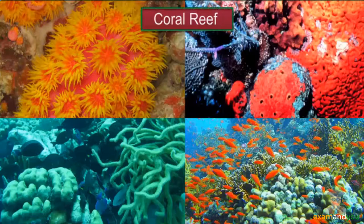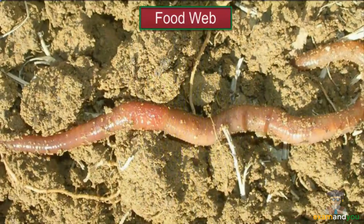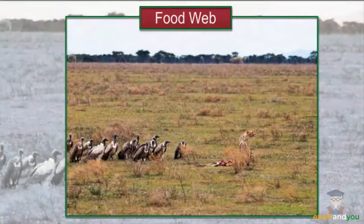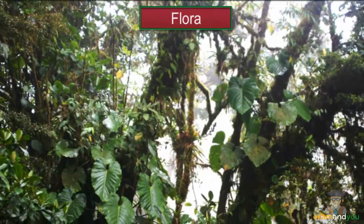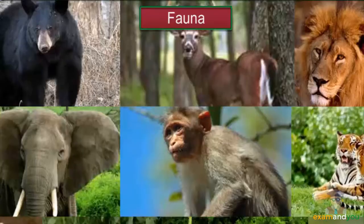The variety of living things found in a region, country, or the entire Earth is called its biological diversity, or biodiversity. Here is a picture showing the biodiversity of a coral reef. We do not live in isolation from plants and animals around us. Various species that form the biodiversity of a region are interdependent on each other.